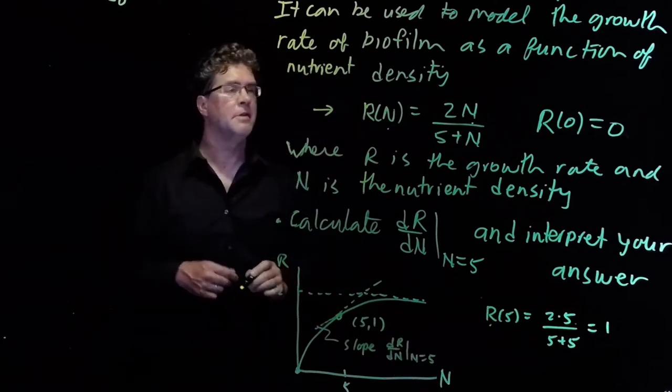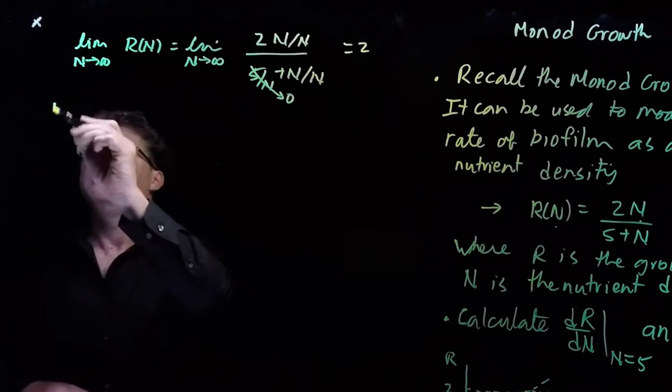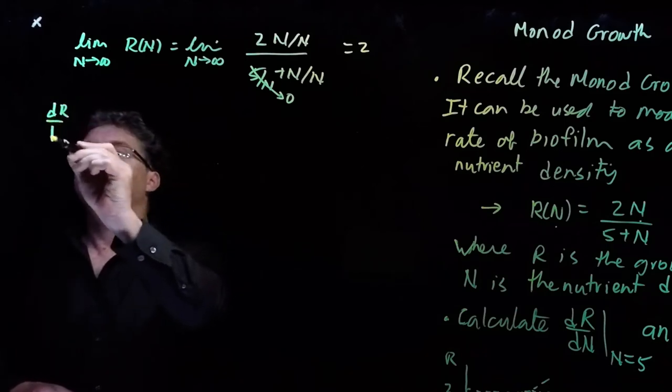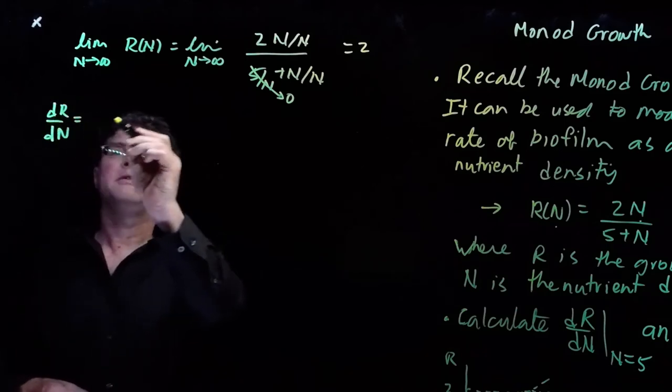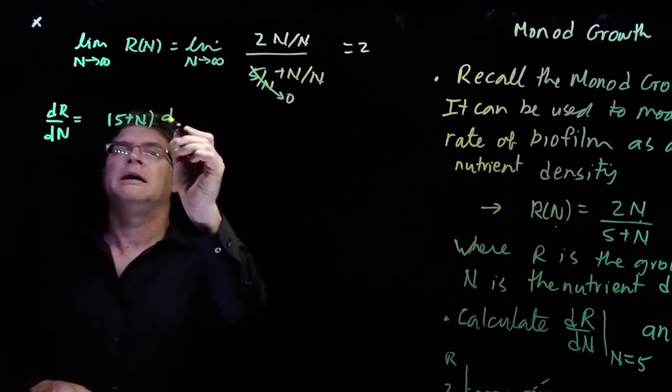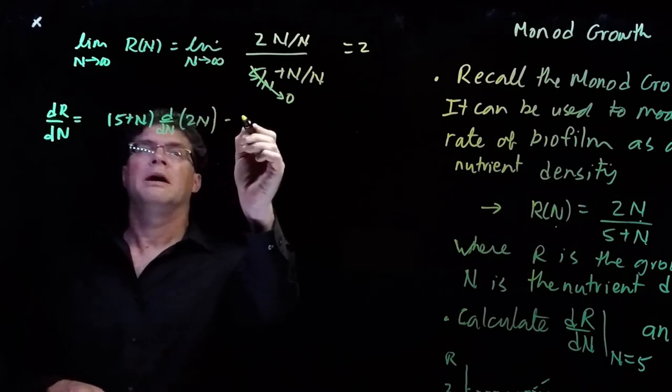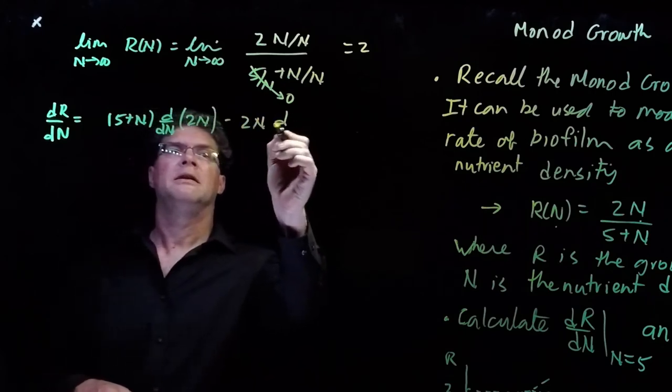And we're asked to calculate it. So let's go ahead and calculate it. And so we'll write dr/dn is equal to low d high minus high d low.